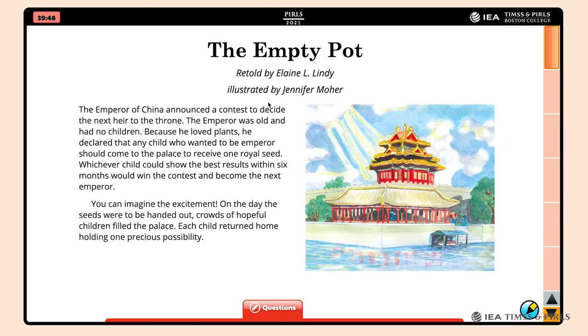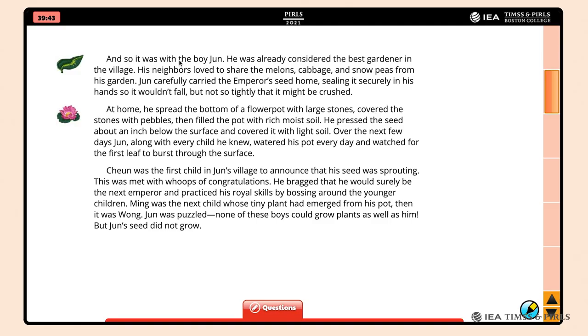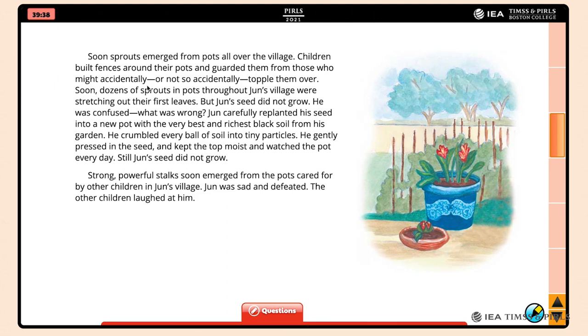With the PIRLS 2021 digital interface, students can begin the Empty Pot passage by scrolling through its six pages before answering the questions, much as they would read through a paper passage.